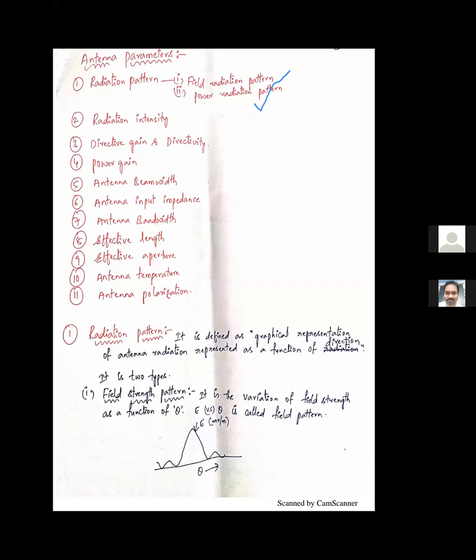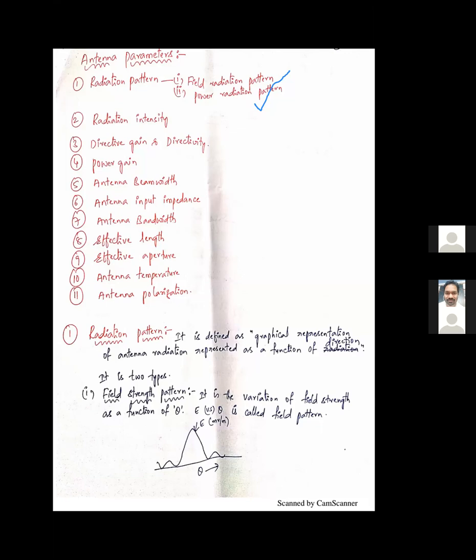There are two definitions regarding radiation pattern: Half Power Beam Width (HPBW) and Beam Width Between First Nulls (BWFN). In both terms we find BW, which stands for beam width. Beam width is nothing but angular width.